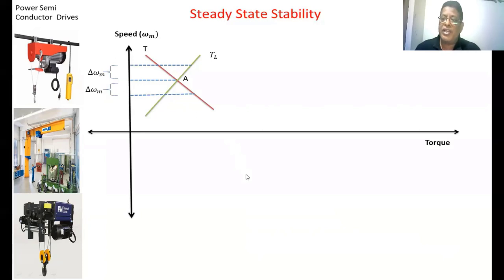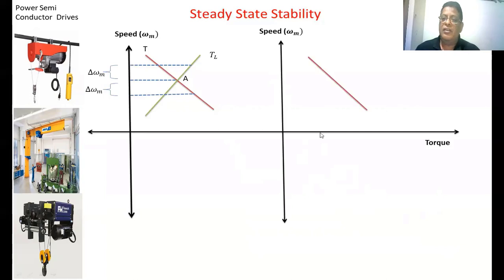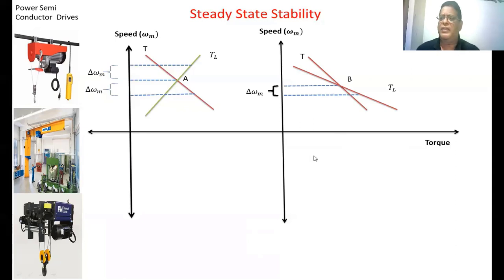Now we are not going to change the motor. We change the type of load applied to the motor in the second case, to examine whether the system is stable or not in steady state. On the y-axis we have taken the speed. This is the speed-torque characteristic of the motor and this is the speed-torque characteristic of the load. For this load, this is the equilibrium point B. Due to some disturbance the speed of the motor decreases. At this point, drawing a dotted line that intersects the load torque and motor torque at their respective points.